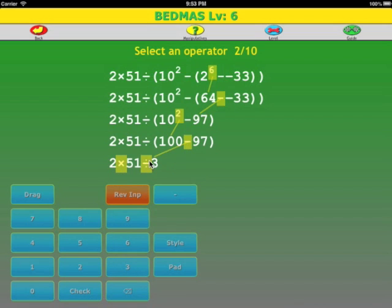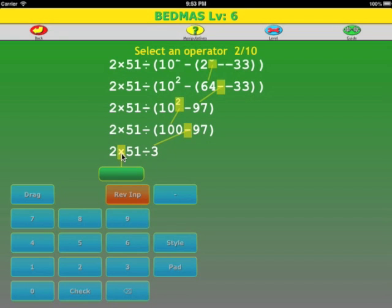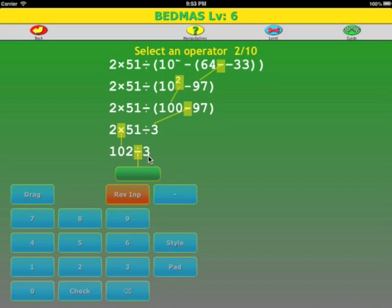We have multiplication and division. We do this left to right. So we pick multiplication. 2 times 51 is 102. And there is only one operator left. 102 divided by 3.